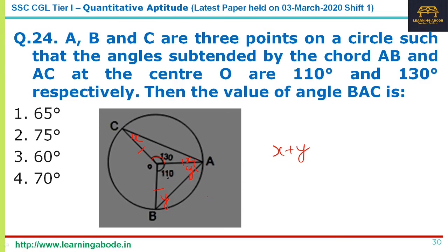Angle BAC = x + y = 25 + 35 = 60 degrees, answer option 3 for question number 24.